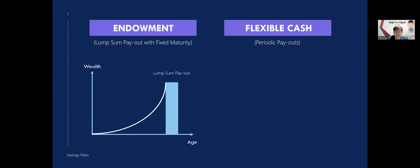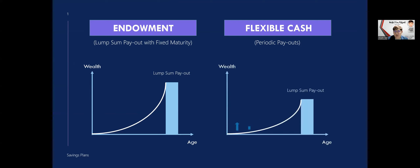So how does endowment work in a visual sense? You contribute all your premiums and at a certain age, you do get a lump sum payout. However, for flexible cash or payout, assuming the same amount of premiums, you can choose to withdraw some of the money — maybe about 30% of what you have put in. And later on, when you claim the amount of money, it will be way less than what it would have been compared to an endowment.